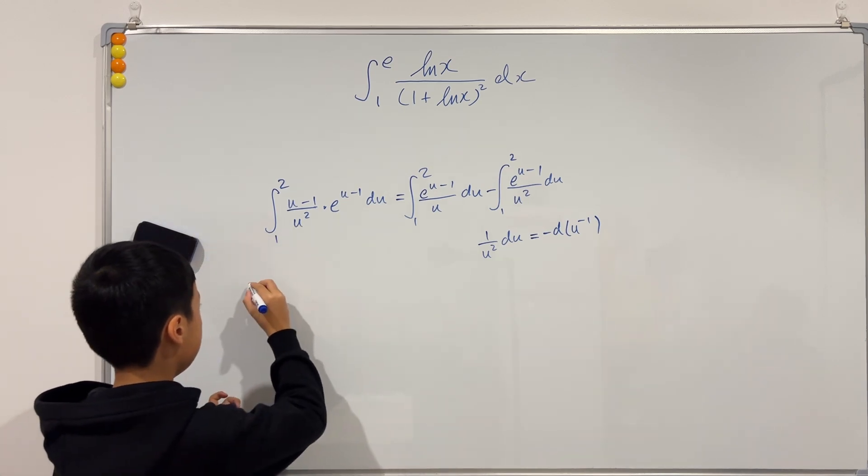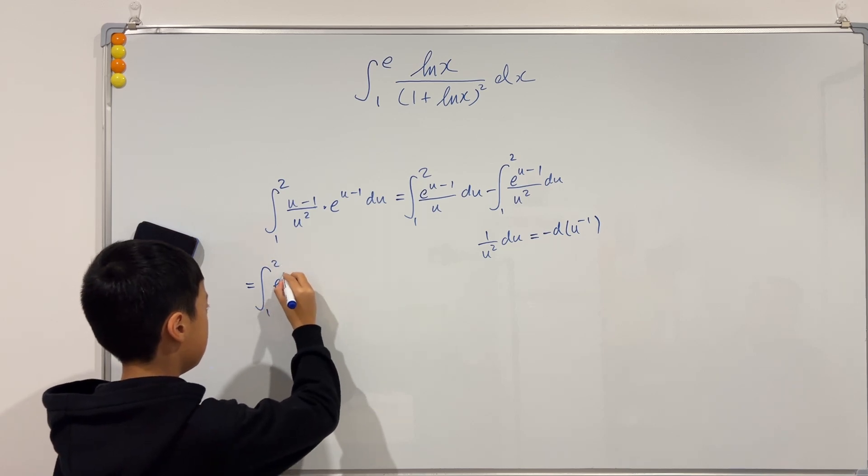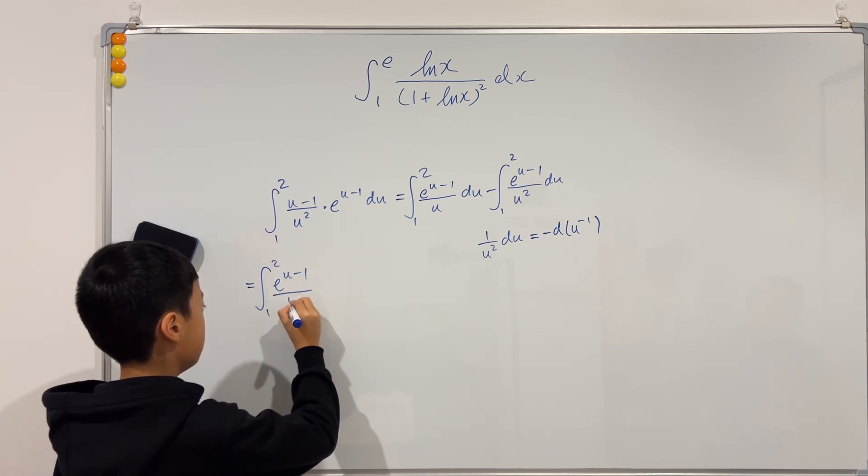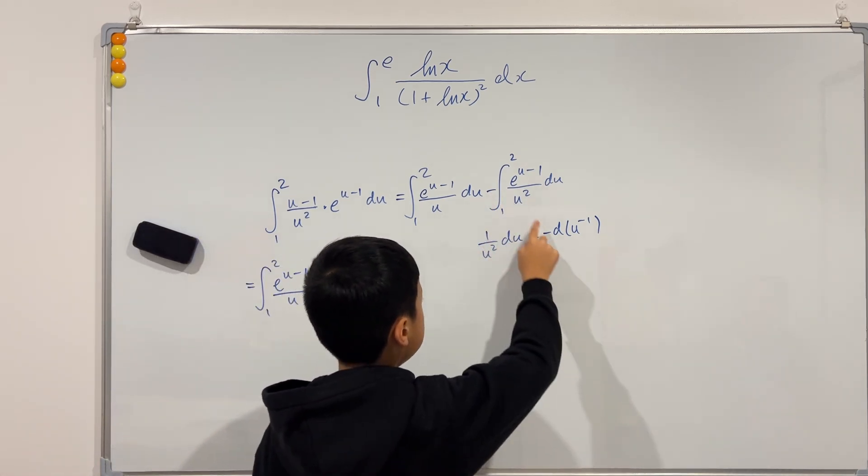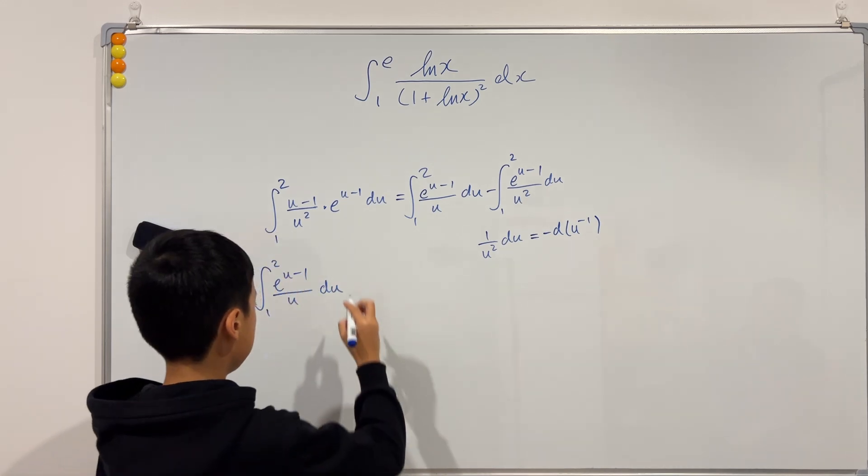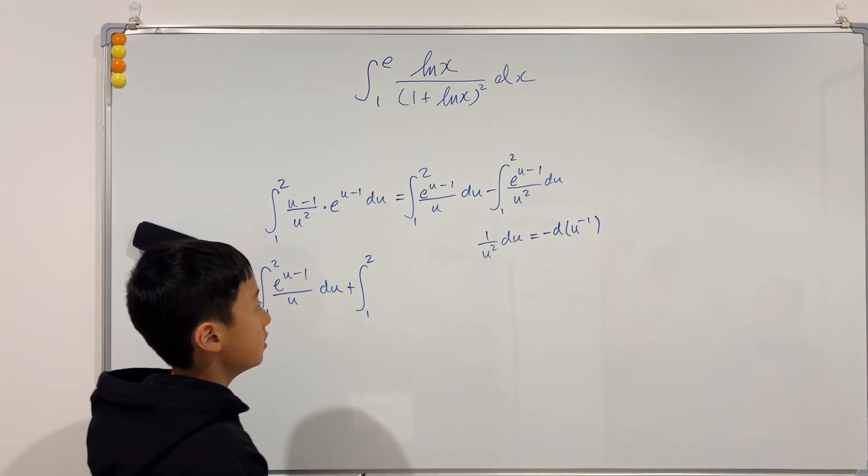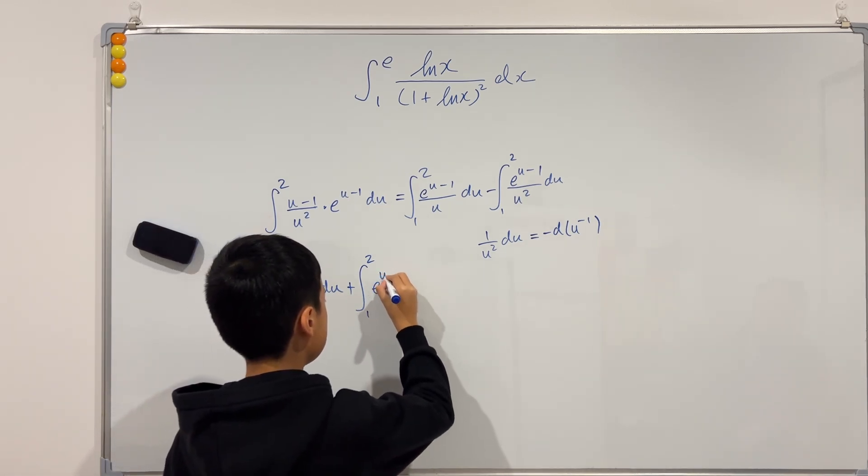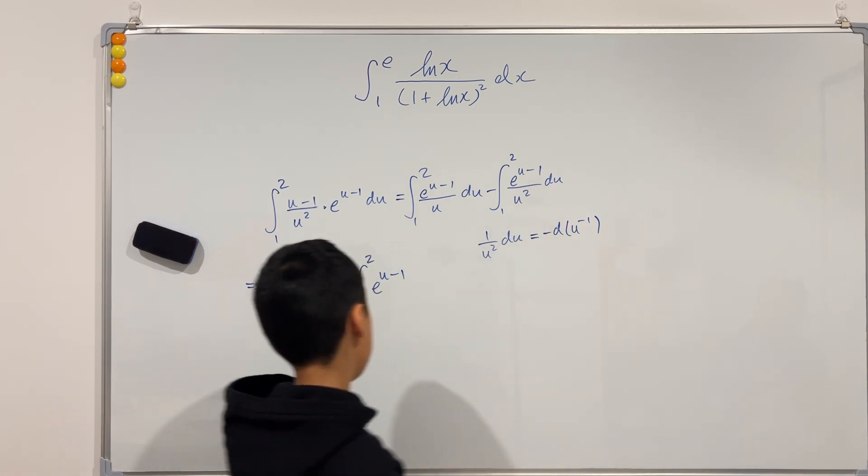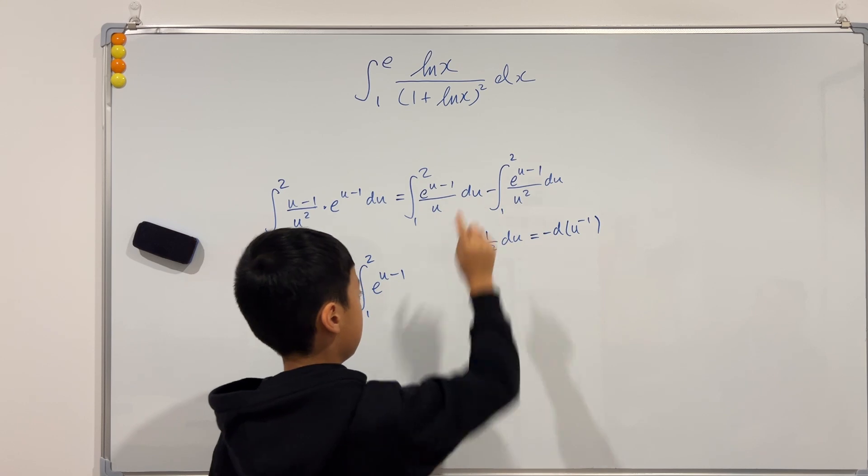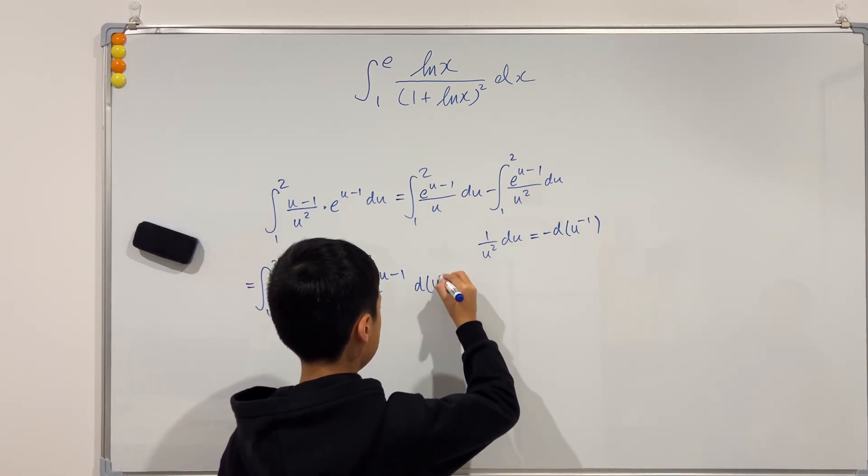So if we just keep writing this, equal to integral from 1 to 2 of e to the u minus 1 over u du. And then this minus and this minus counts out to become a plus. Integral from 1 to 2 of e to the u minus 1, and this over u squared becomes this without a negative because this negative was put here. So it will just become du negative 1.